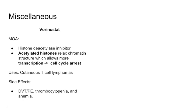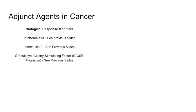Vorinostat is a histone deacetylase inhibitor. Inhibiting deacetylation of histones results in a more acetylated, relaxed chromatin structure, which allows increased transcription of cell cycle arrest and cellular apoptosis proteins. It's primarily used for cutaneous T-cell lymphomas. Know that it is a histone deacetylase inhibitor that leads to increased transcription. That concludes antineoplastic pharmacology, one of the harder subjects in pharmacology.